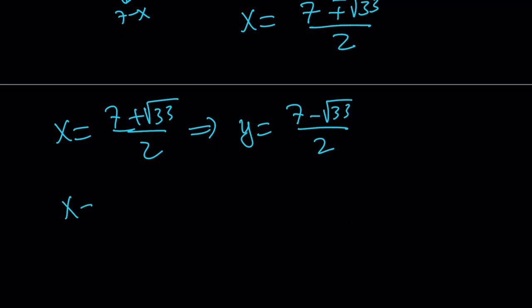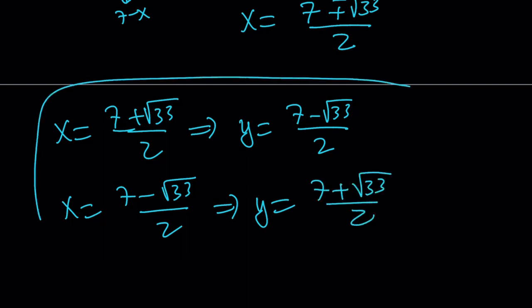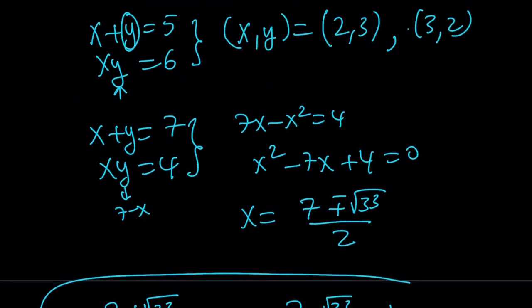If x is equal to 7 plus root 33 over 2, then y is just going to be its conjugate because their sum and product need to be integers. So we do need that relationship. And they're just going to switch around. And we're going to get all the solutions from here. So these are going to be the solutions.